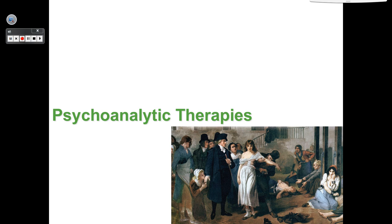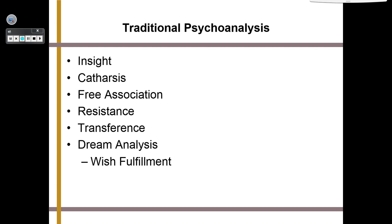Traditional psychoanalysis involves insight, catharsis, free association, resistance, and transference. Insight is that light-bulb moment. Catharsis is releasing anger or emotion through physical activity — hitting a pillow, punching a bag — anything like that is considered cathartic. Free association involves tests like the Rorschach and TAT, where you see an image and say the first thing that comes to mind.